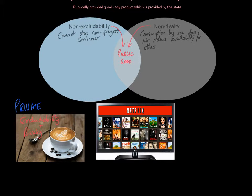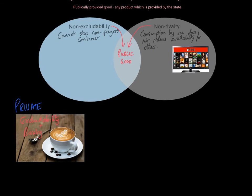Next, let's think about a Netflix service. Does Netflix have a way to prevent non-payers from consuming it? Yes — you need a subscription, and if you don't pay, they will cease your access. So Netflix does have excludability. But if I'm watching a film on Netflix, that doesn't diminish the amount available for others — it's a streamed service. So Netflix has non-rivalry but is excludable. We can't refer to it as a public good because it doesn't have both characteristics.